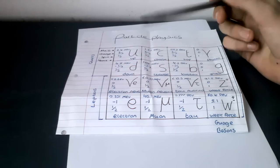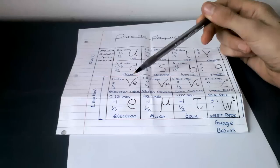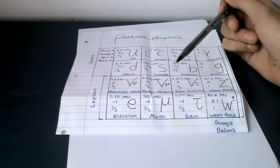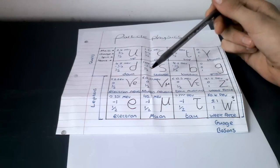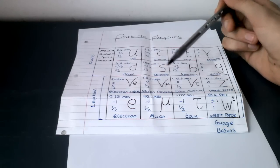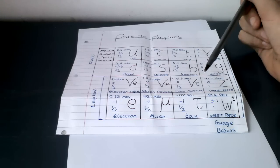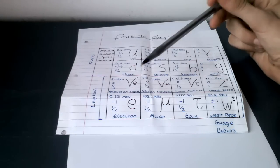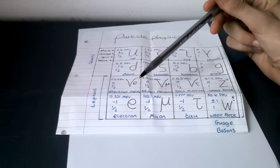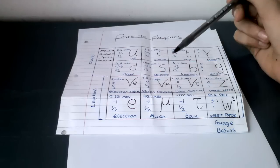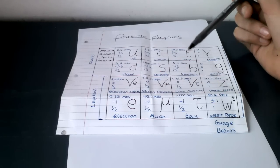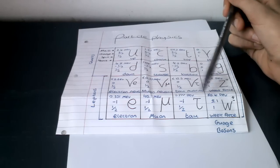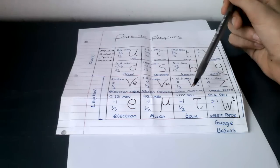The mass of an electron neutrino is bigger than 2.2 eV. The mass of a muon neutrino is bigger than 0.17 MeV. The mass of a tau neutrino is bigger than 15.5 MeV. The mass of an electron is 0.551 MeV, that's important. The mass of the muon is 105.7 MeV. The mass of the tau is 1.77 GeV.